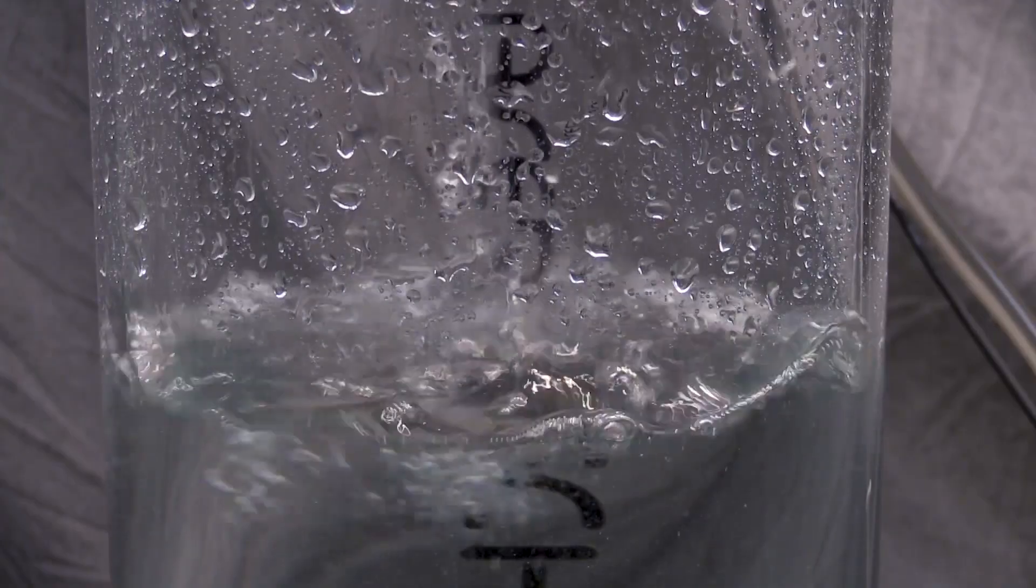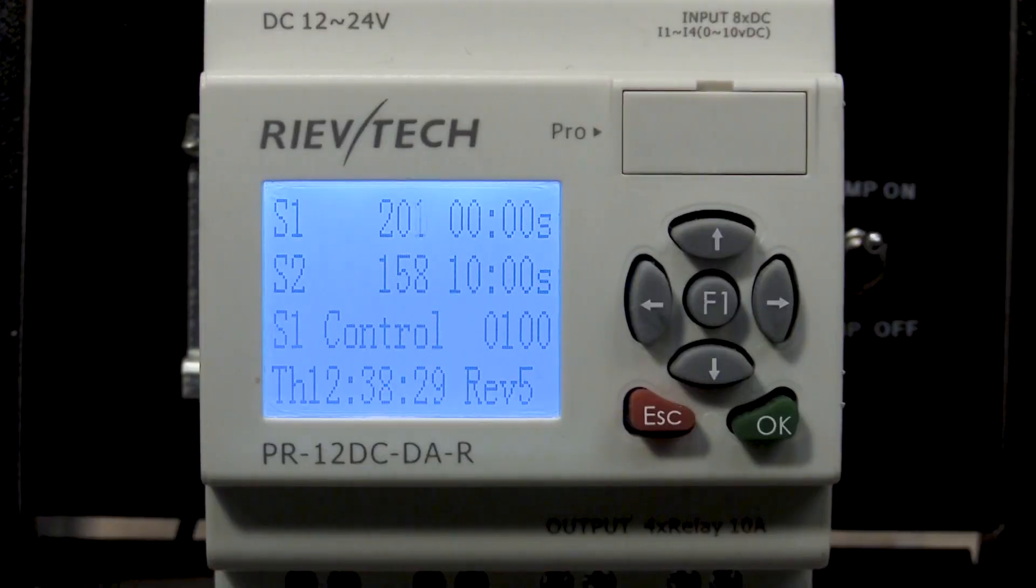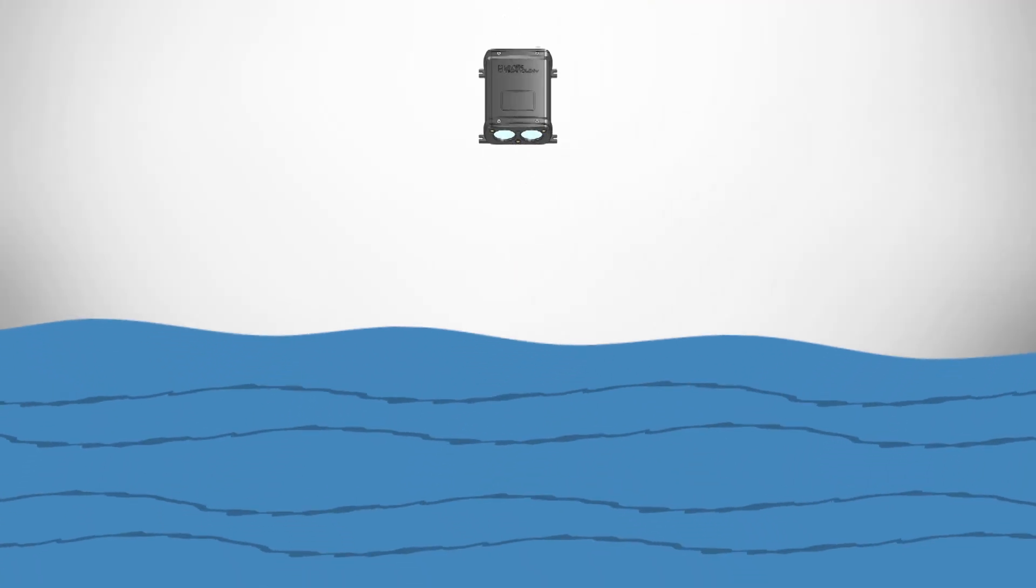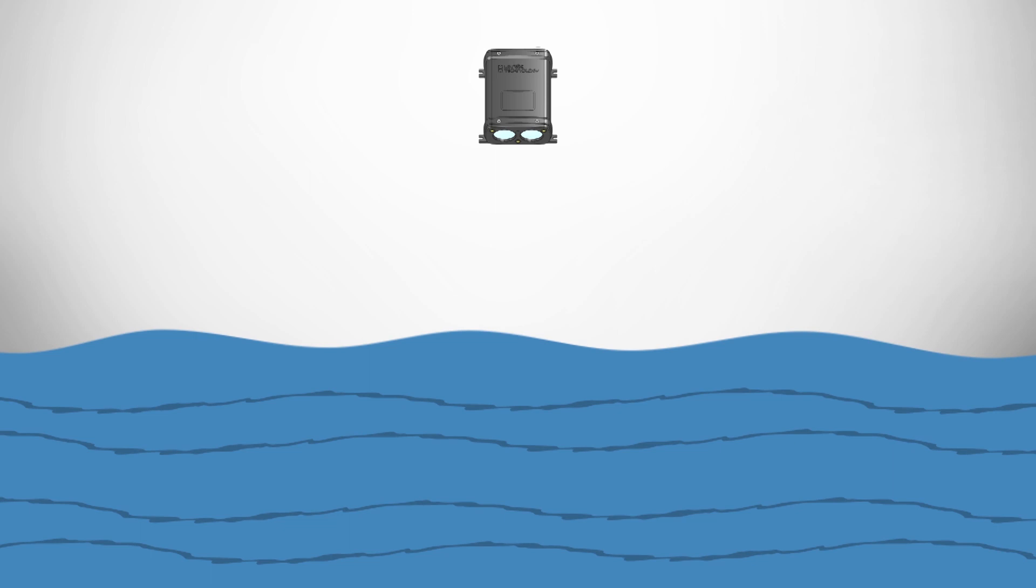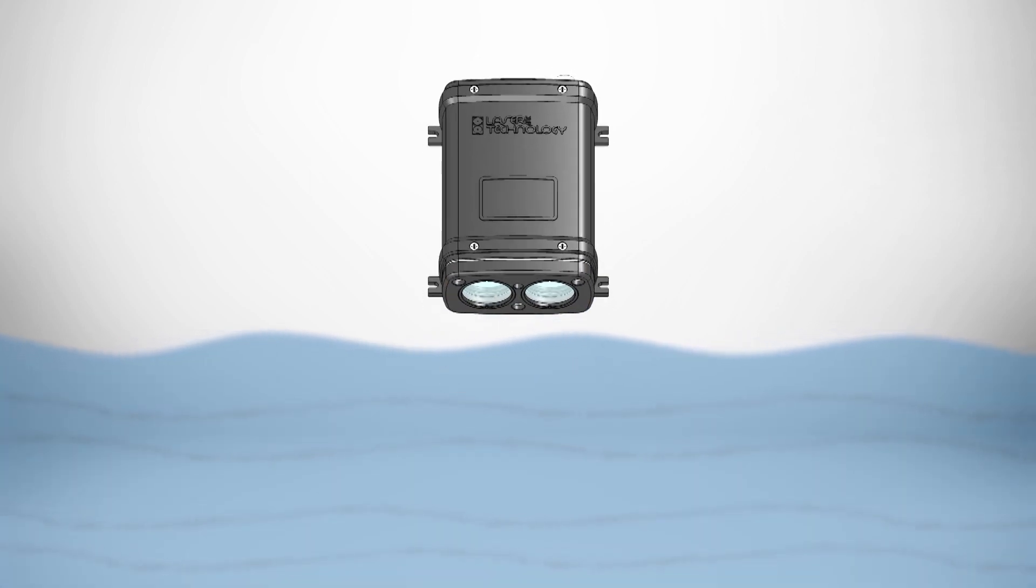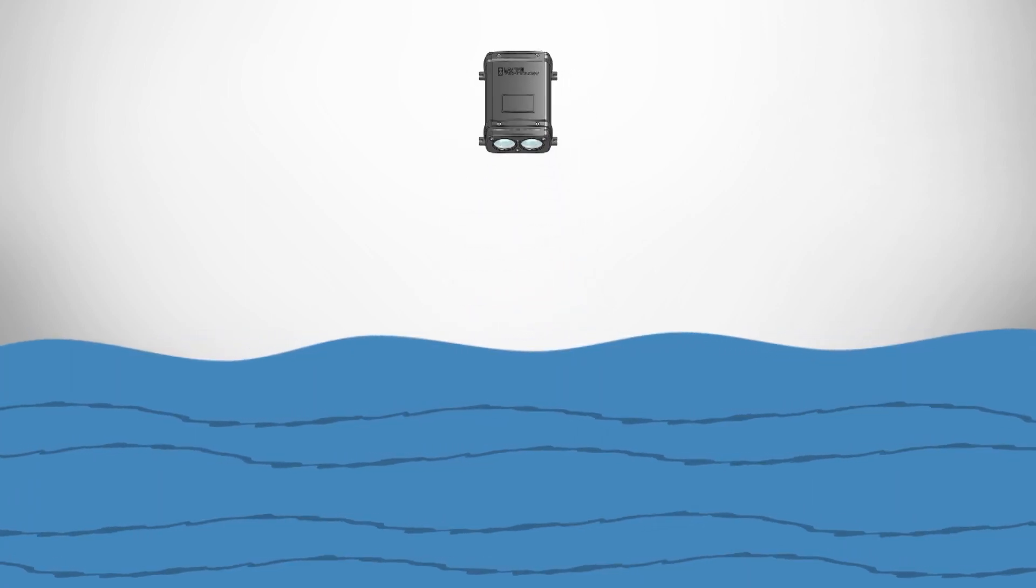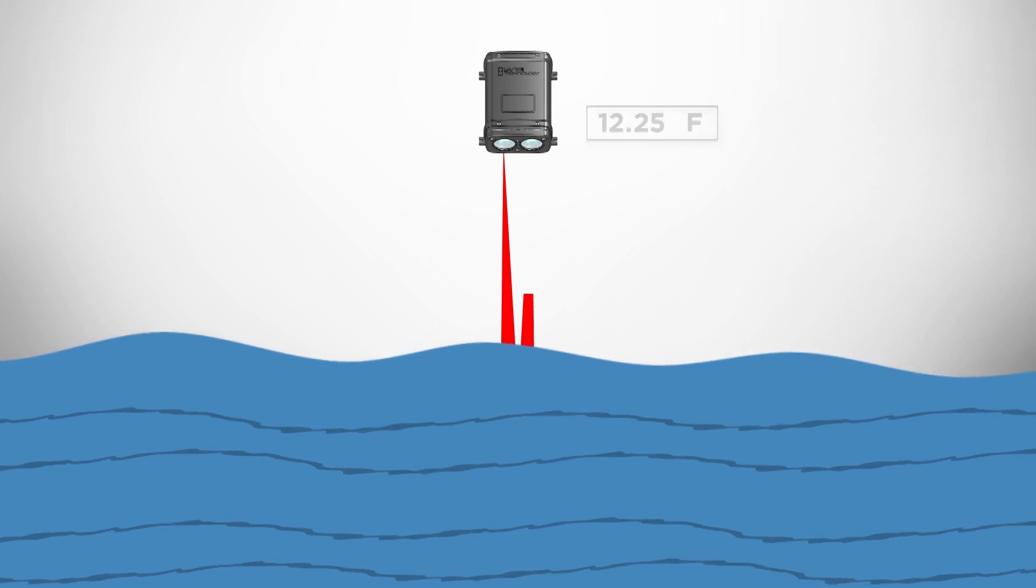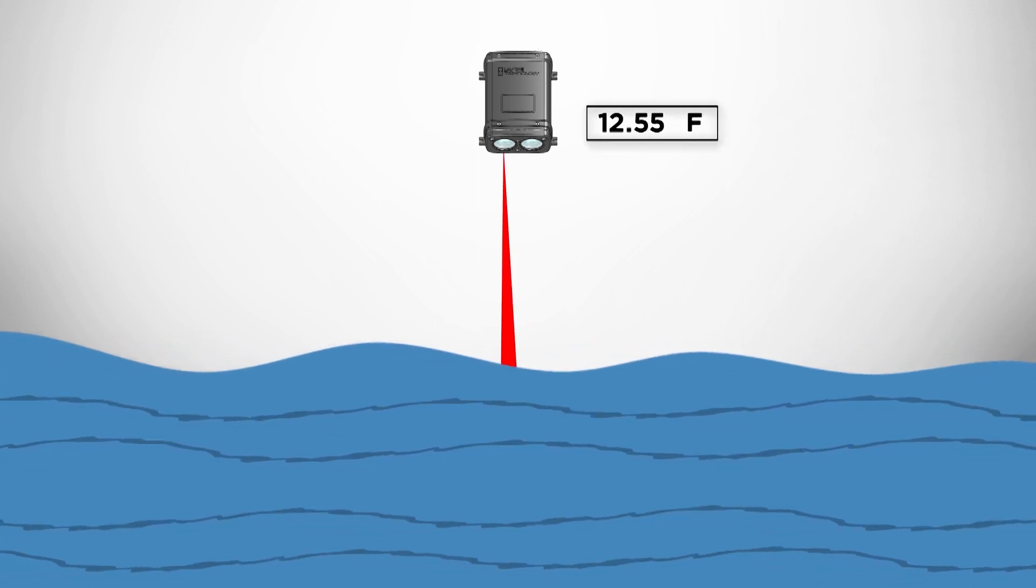Notice how turbulent the water surface is within the left tank, yet the S330 can still determine its level with high precision. This is possible for two reasons. First, a diffusing lens is applied to the front of the laser sensor, which gives the sensor the ability to spread its beam out over a large sampling area of the liquid surface.